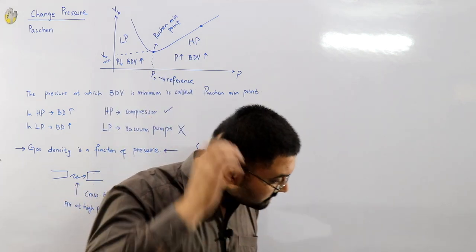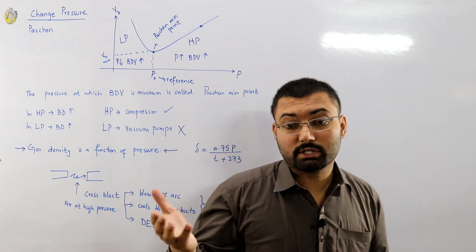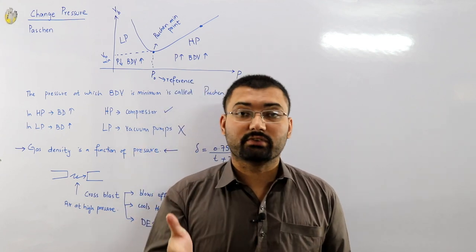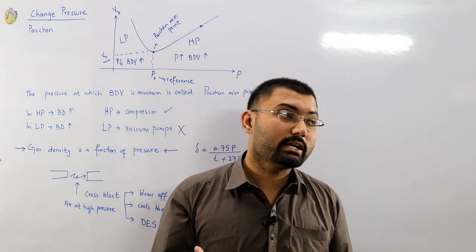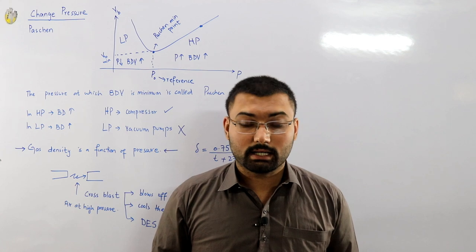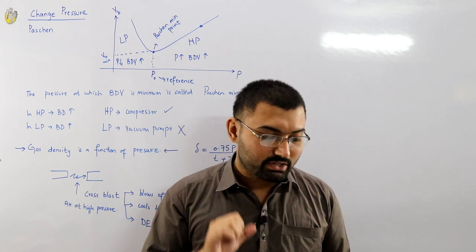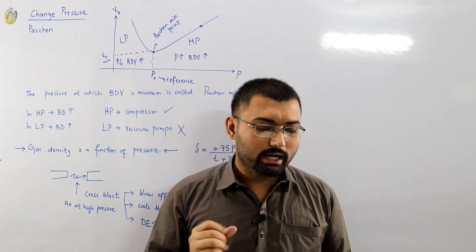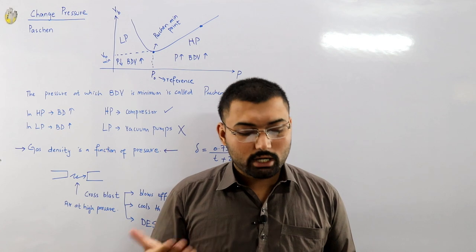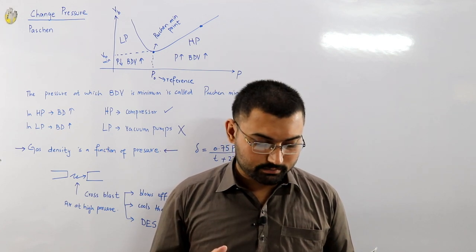We talked about electrons — they were present due to nature. We talked about the electronegative gas, which solved the problem a little. But now using high pressure air, it has eliminated the arc.